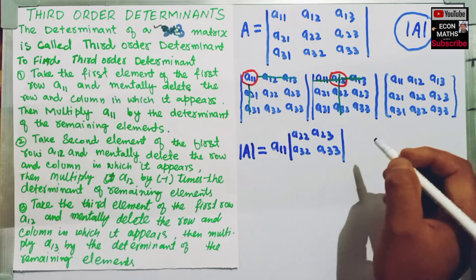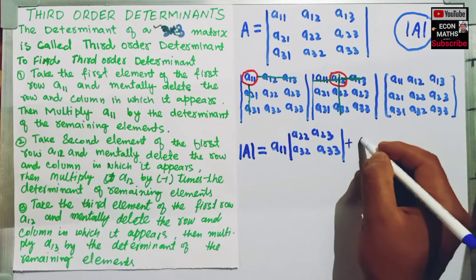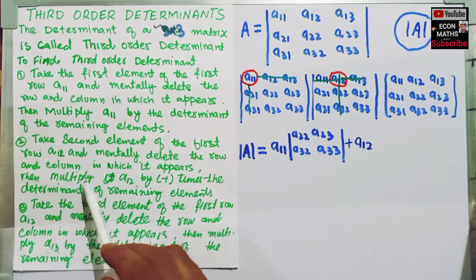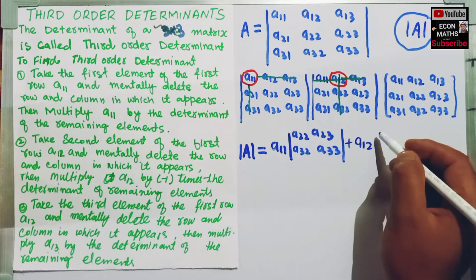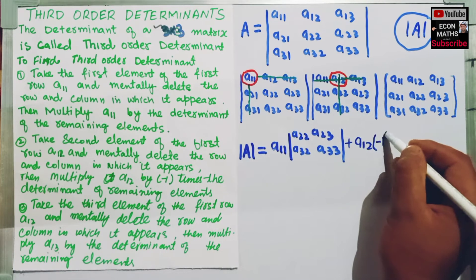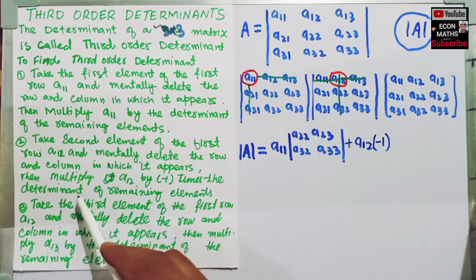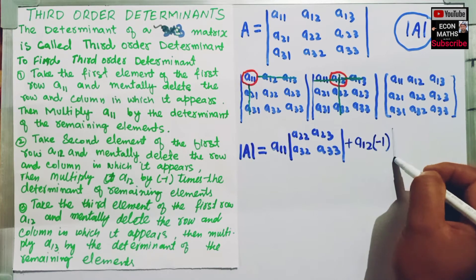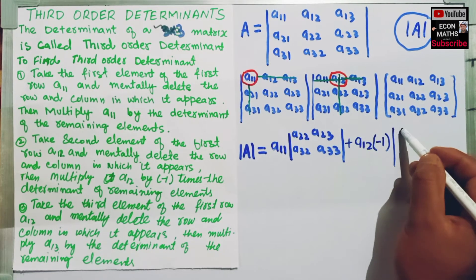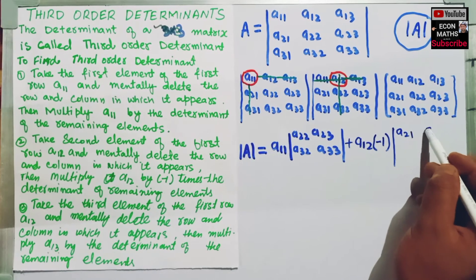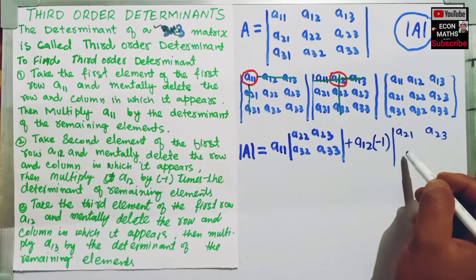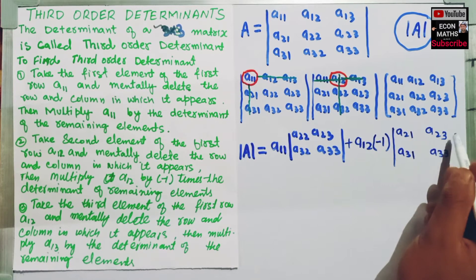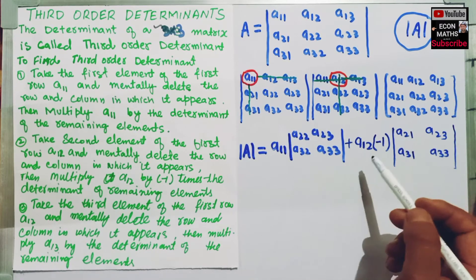We have A12. Then multiply A12 by minus 1, so we multiply A12 by minus 1 times the determinant of the remaining elements. The remaining elements are A21, A23, A31, and A33. This completes the second step.